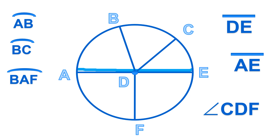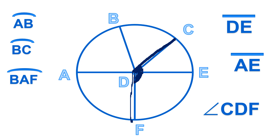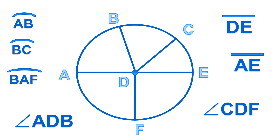Next is Angle CDF — Angle C, D, F — where angle D is your vertex. Another example is Angle ADB, where angle D is also your vertex. Remember that Angle ADB and Angle CDF are examples of central angles, and we will discuss this more in our next topic.